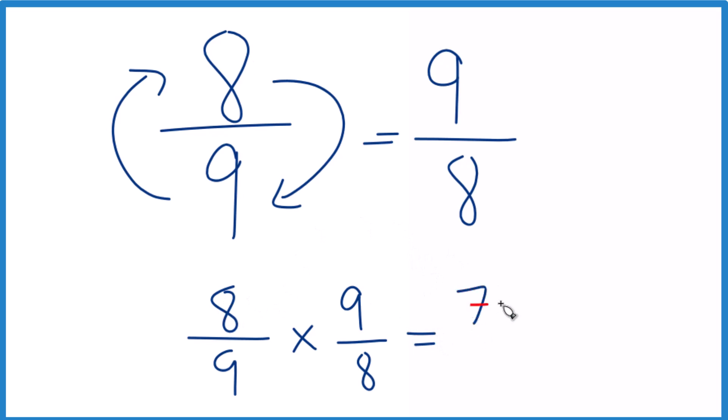So eight times nine, that's seventy-two. Nine times eight, that's seventy-two. Seventy-two divided by seventy-two equals one. So we did this correctly.